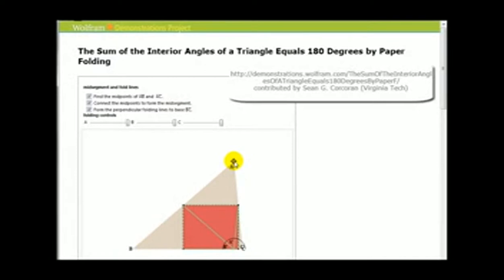It doesn't matter if we change the triangle that we have. The result will still be three angles that form a straight angle.